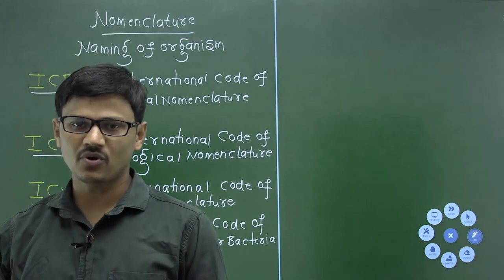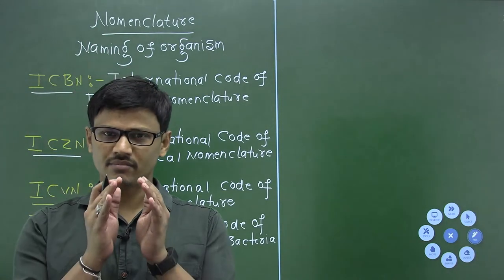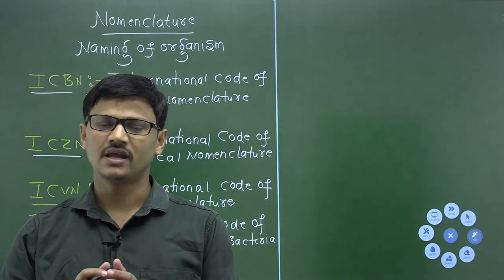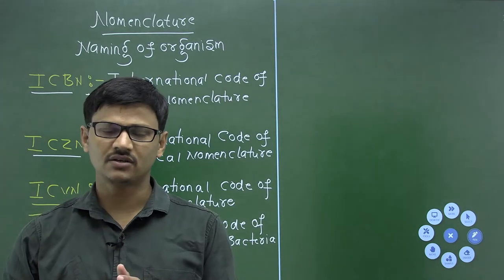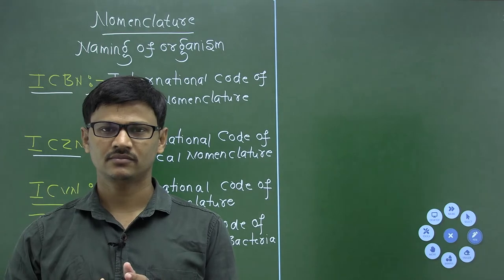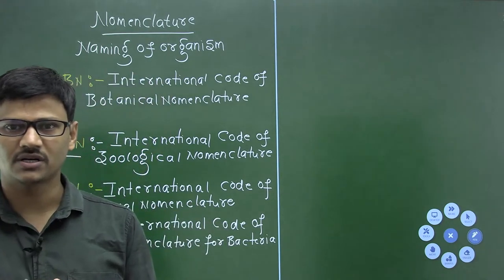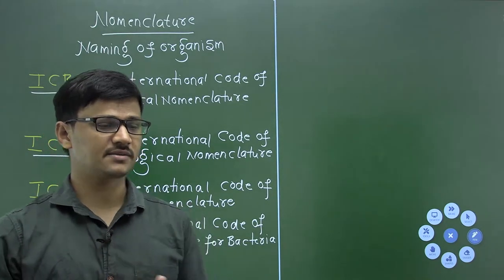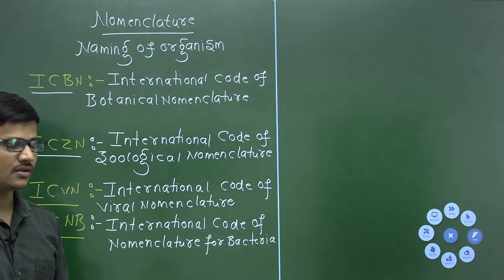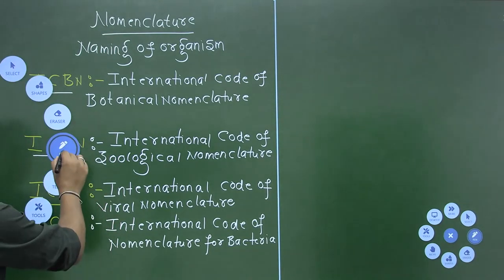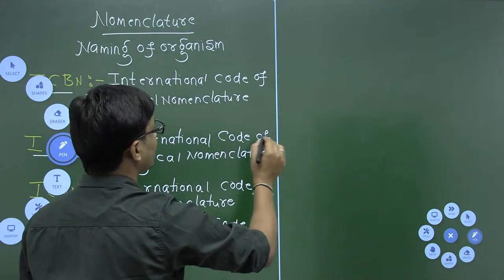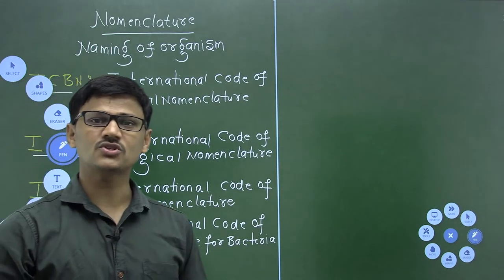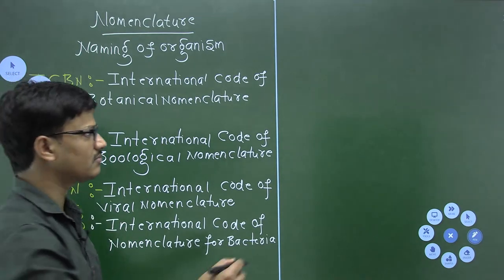The main function of these codes is that they make rules, criteria, and principles — rules and regulations while naming any organism. Whenever a new organism is discovered, scientists must follow the rules set by these codes. One of the most widely accepted systems of naming is binomial nomenclature.